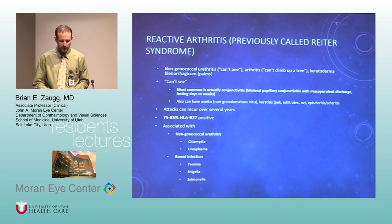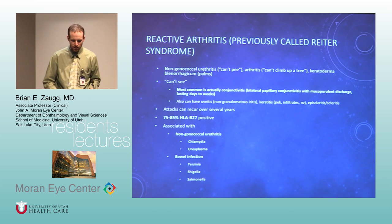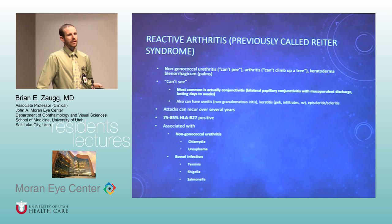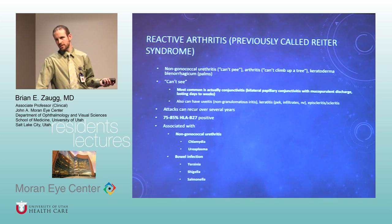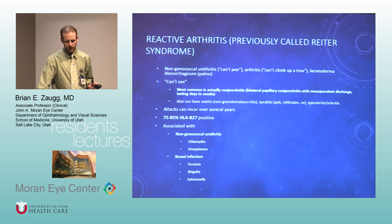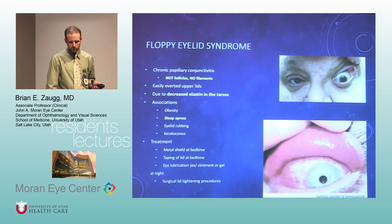Reactive arthritis — they love this one. Can't see, can't pee, can't climb a tree. They like to ask about the rash: keratoderma blennorrhagicum on the palms. HLA-B27 associated disease usually.